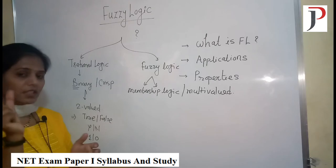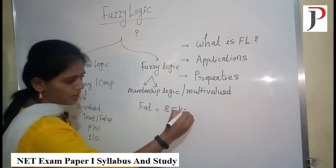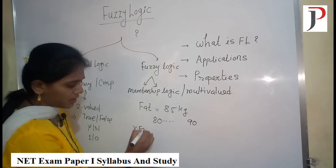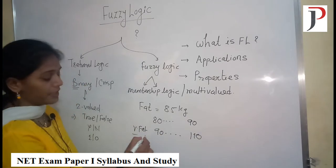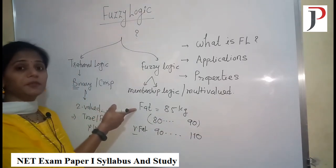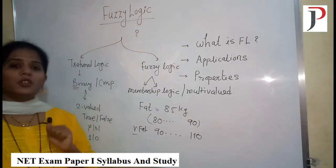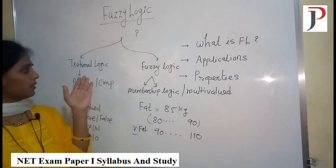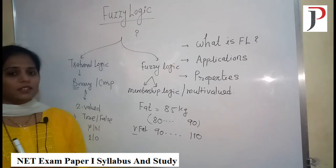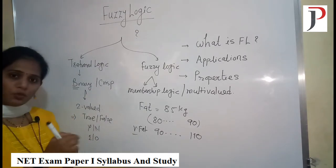So 'fat' is a fuzzy term. For example, if his weight is 85 kg, maybe for fatness I have values from 80 to 90 kg; for very fat, 90 to 110 kg — there is no single value, there are multiple values which describe the term 'fat'. There is no restriction like in binary logic. Another example: if I ask you 'are you married?', the probable answers are only yes or no — that is traditional logic.